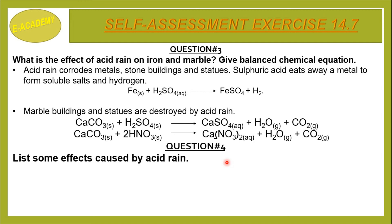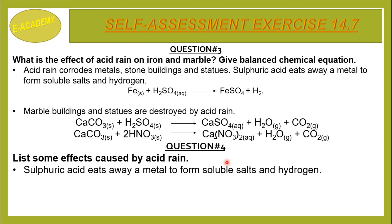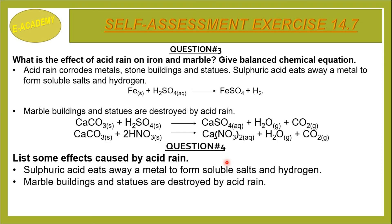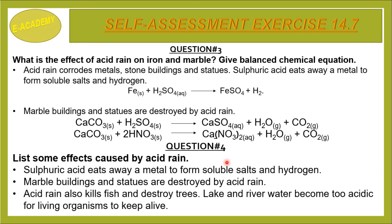Question Number 4: List some effects caused by acid rain. Sulfuric acid eats away metals to form soluble salts and hydrogen. Marble buildings and statues are destroyed by acid rain. Acid rain also kills fish and destroys trees. Lake and river water becomes too acidic for living organisms to survive.